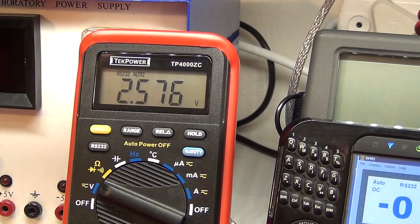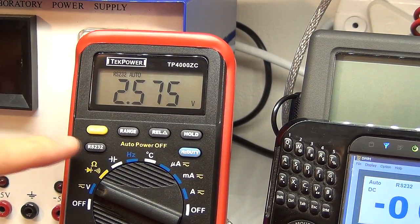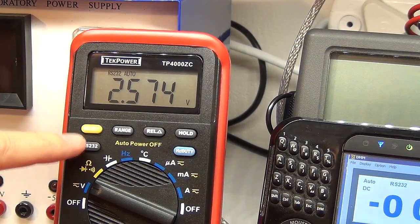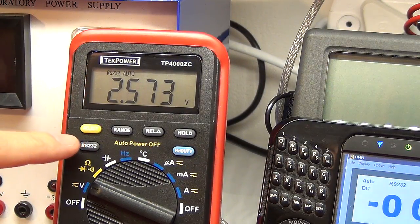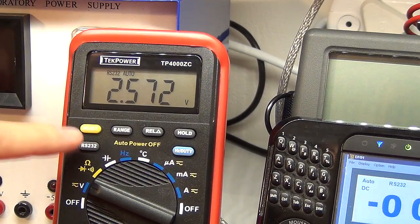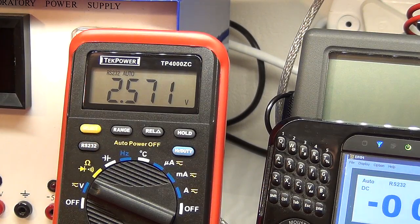By default when you switch the meter on it switches on the RS232 icon on the screen there, so it's ready for data logging. When you switch that off then it stops data logging. So you can intermittently switch it on and off from this button over here while you're logging.